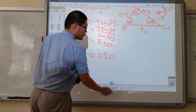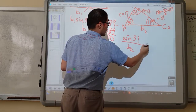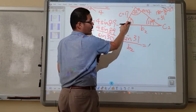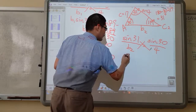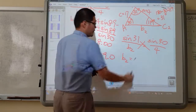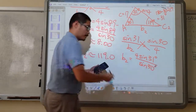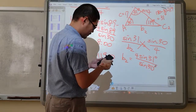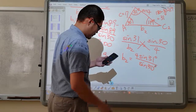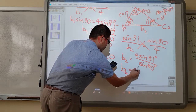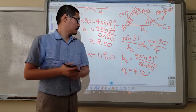And we do the same thing for the second scenario. Sine 31 degrees over B2 equals sine 30 over 4. Solving for B2 — skipping a few steps — if you put that in the calculator, B2 is equal to approximately 4.12.